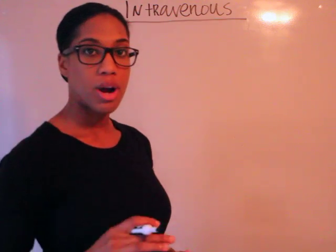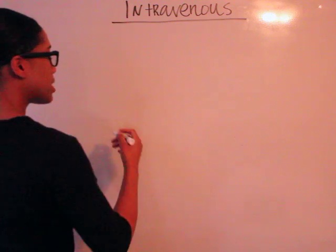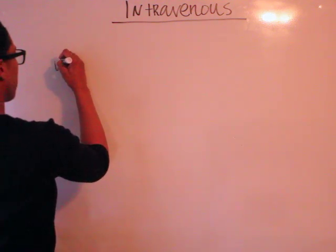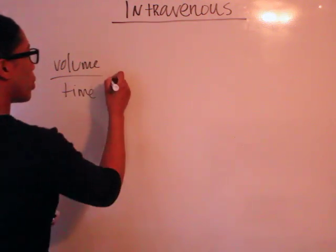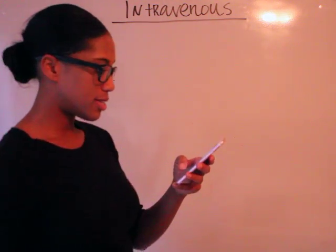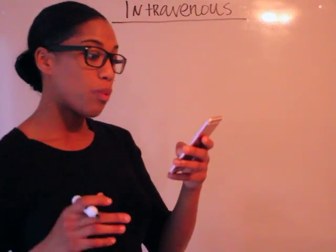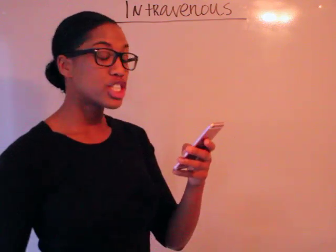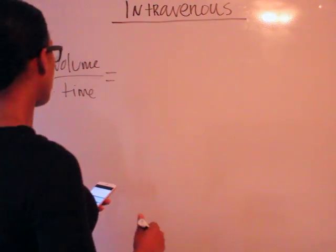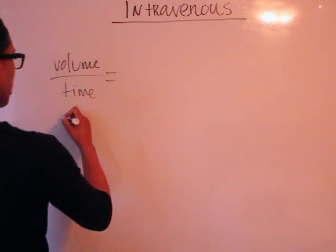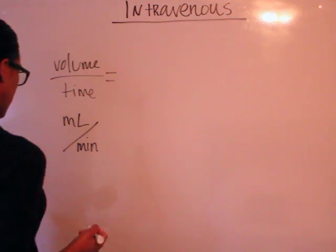Let's work a second problem to make sure we have a solid understanding. Same concept — volume over time. This problem says: a patient is to receive one liter of saline in a one-hour infusion. What is the flow rate in milliliters per minute? In this case, they're looking for MLs over one minute.